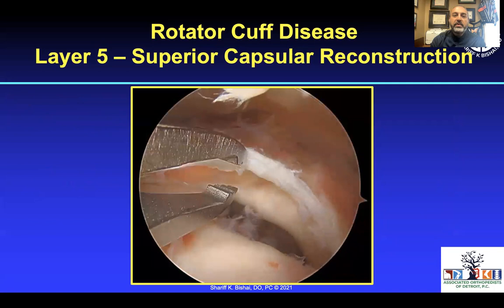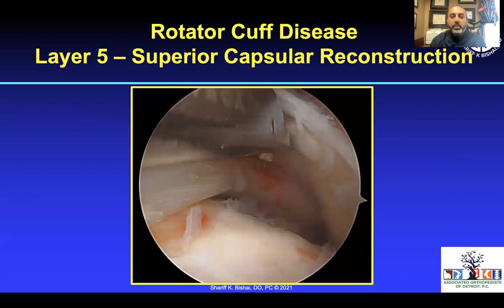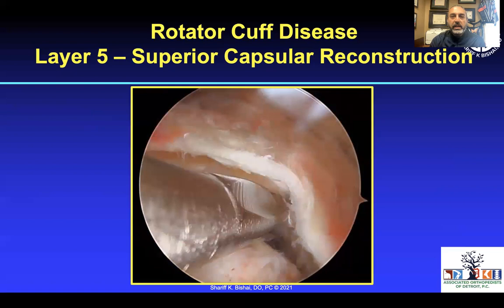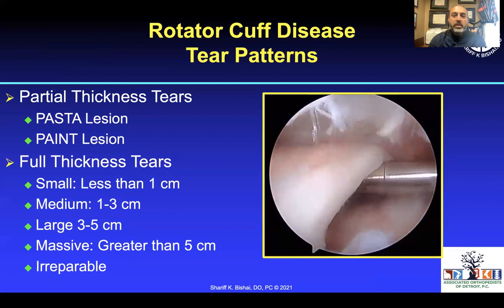The joint capsule has received significant attention over the last few years, and its importance is now better understood. What may look like a delaminated tear is in reality the superior capsule. It sits against the articular margin of the tuberosity, and pulling it too far lateral may over-tension and lead to failure — so that portion needs to be medialized slightly.